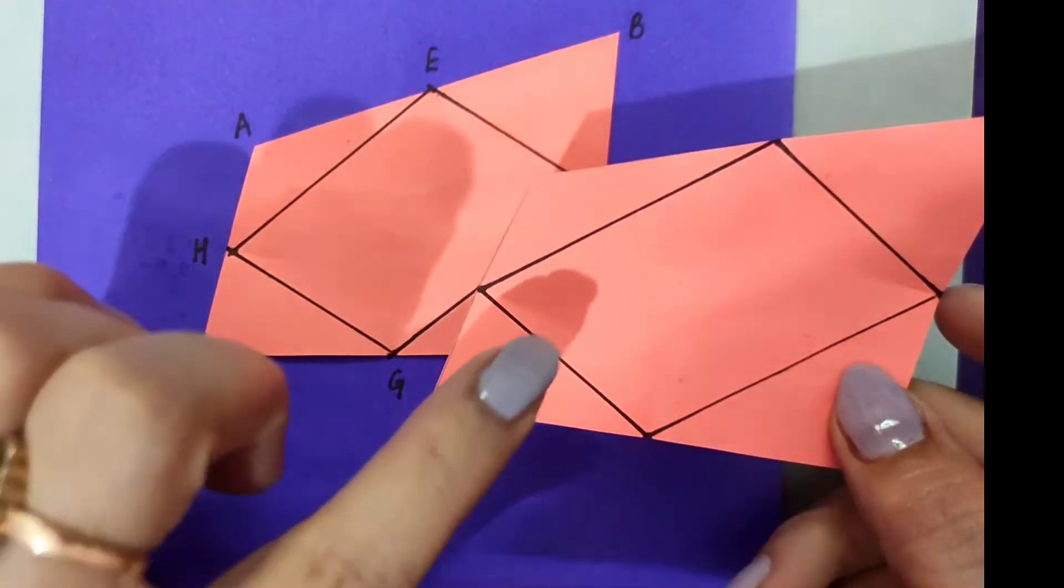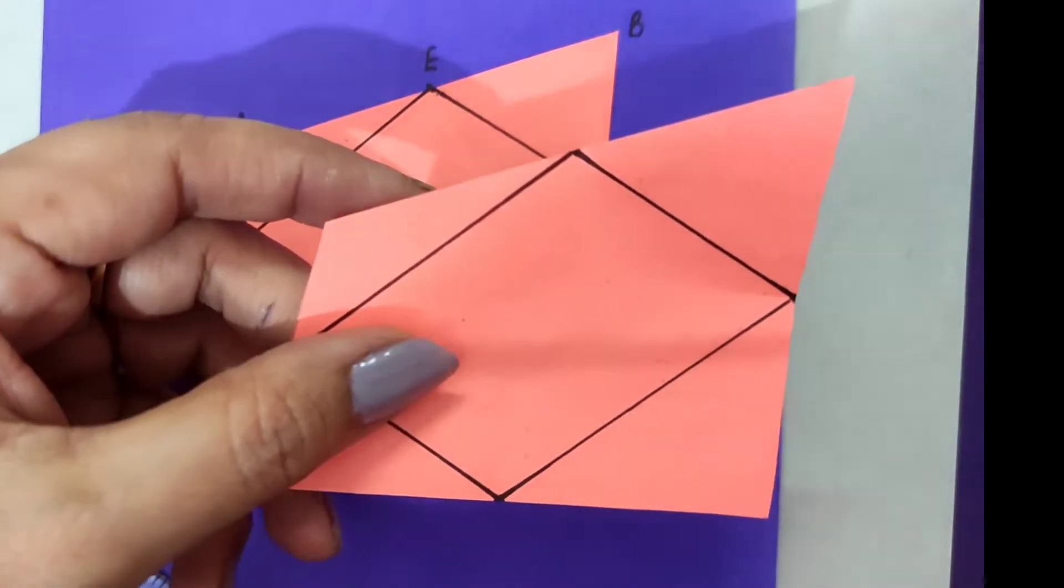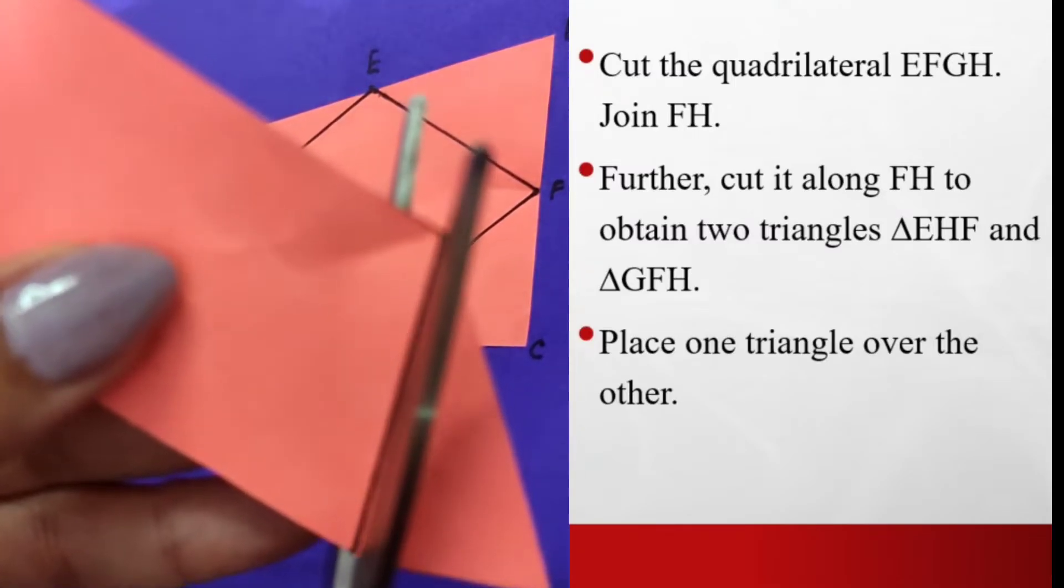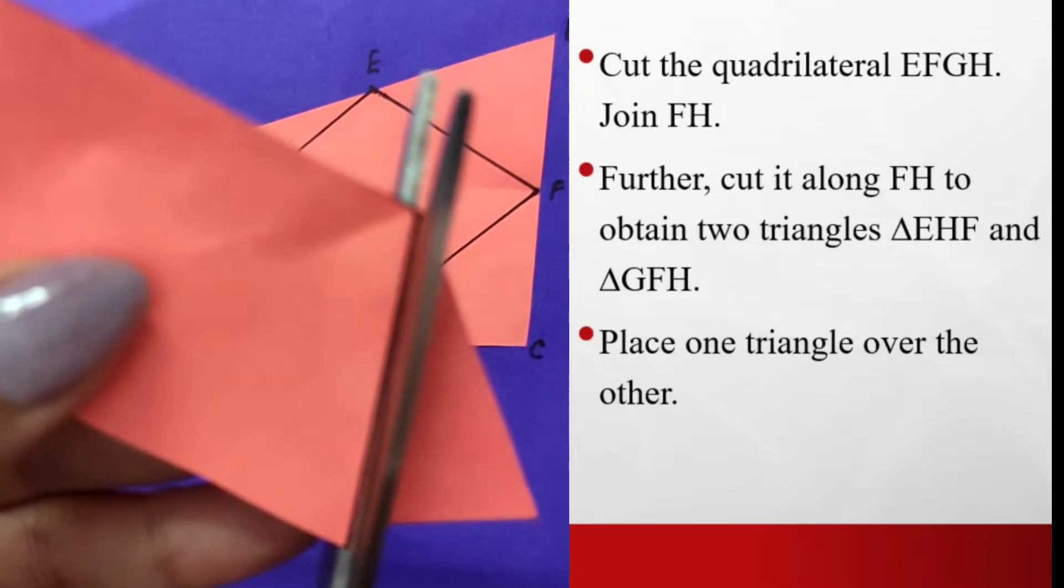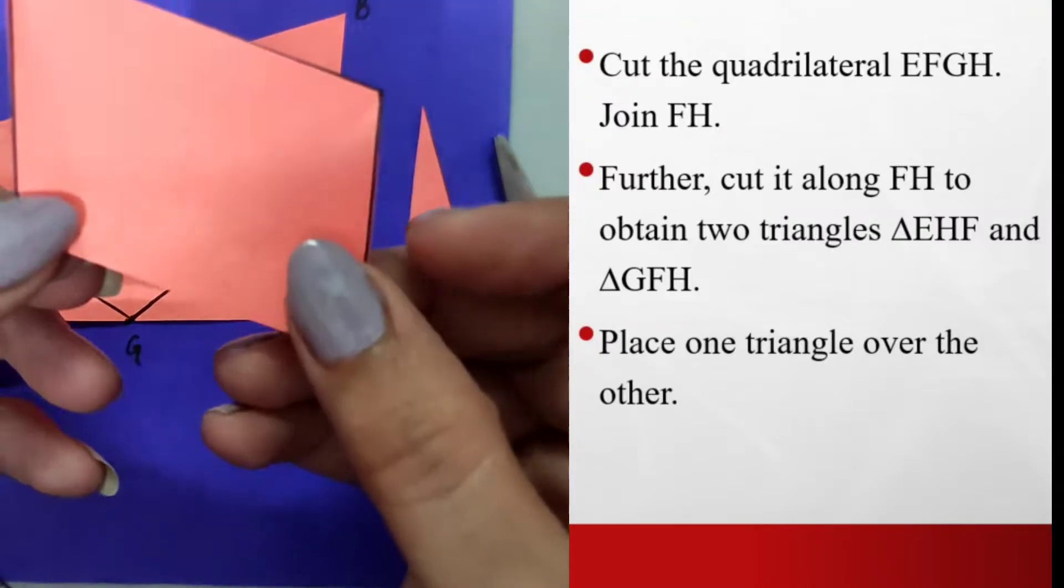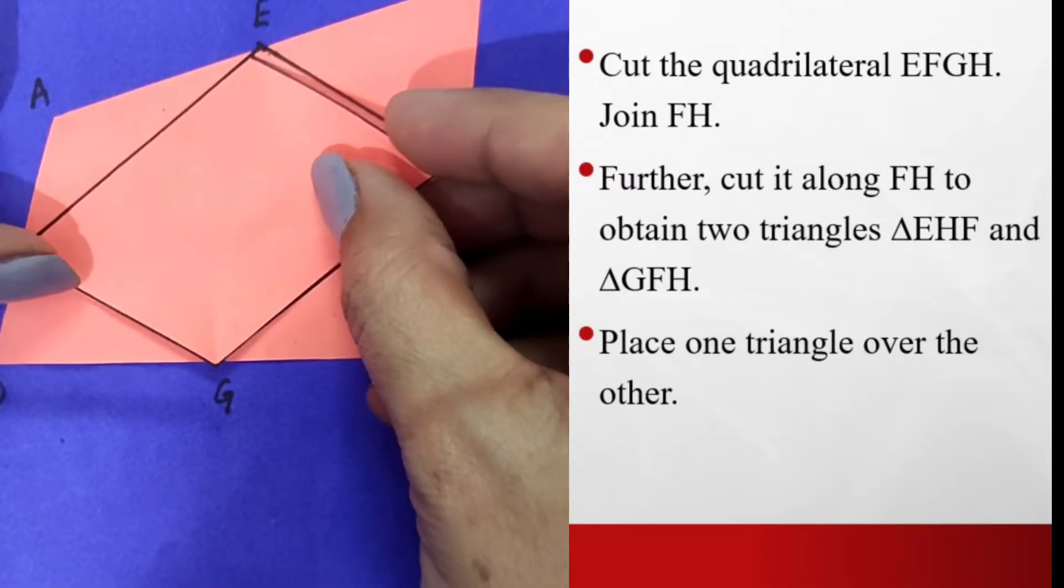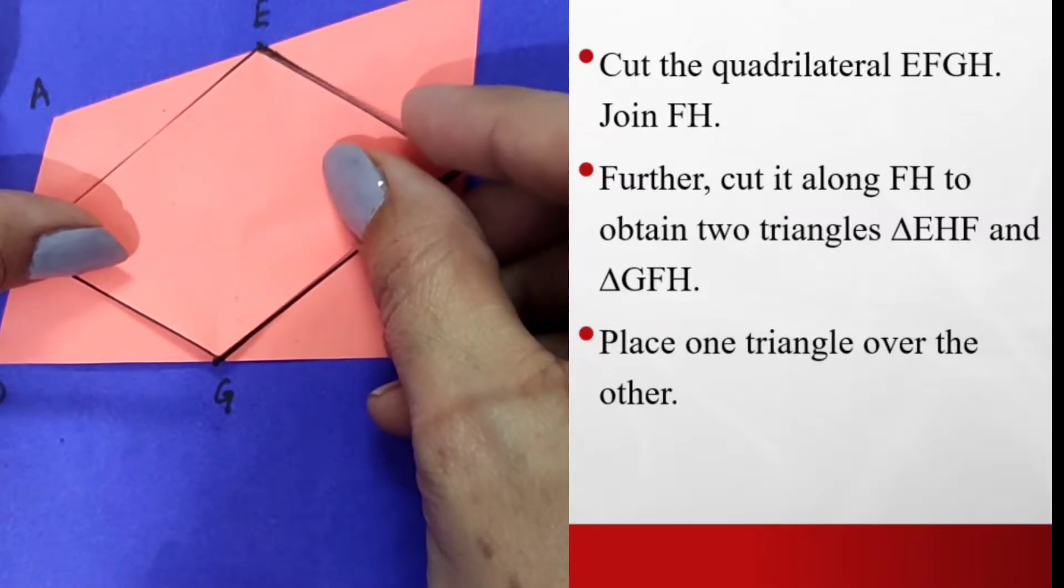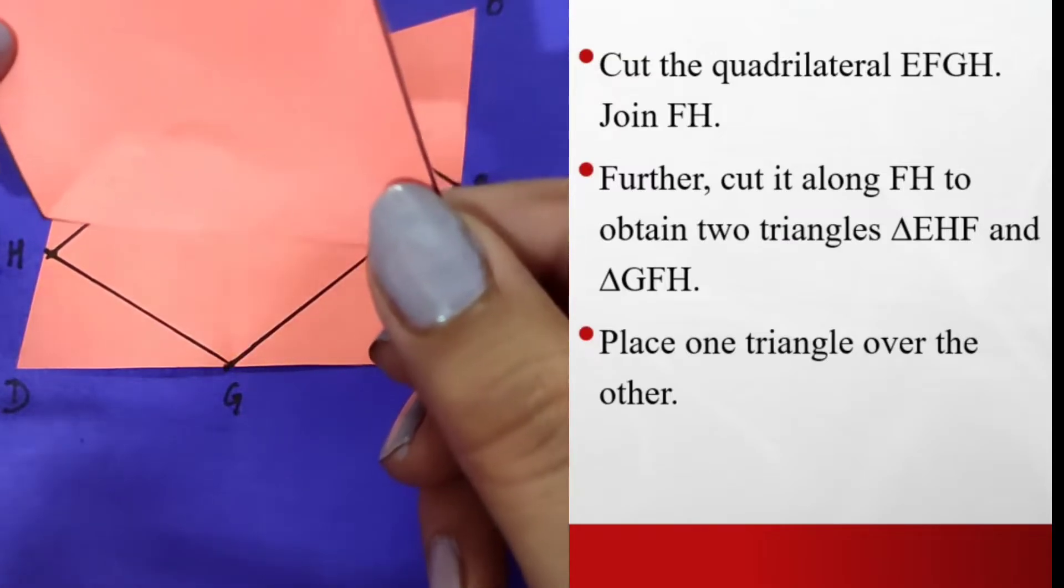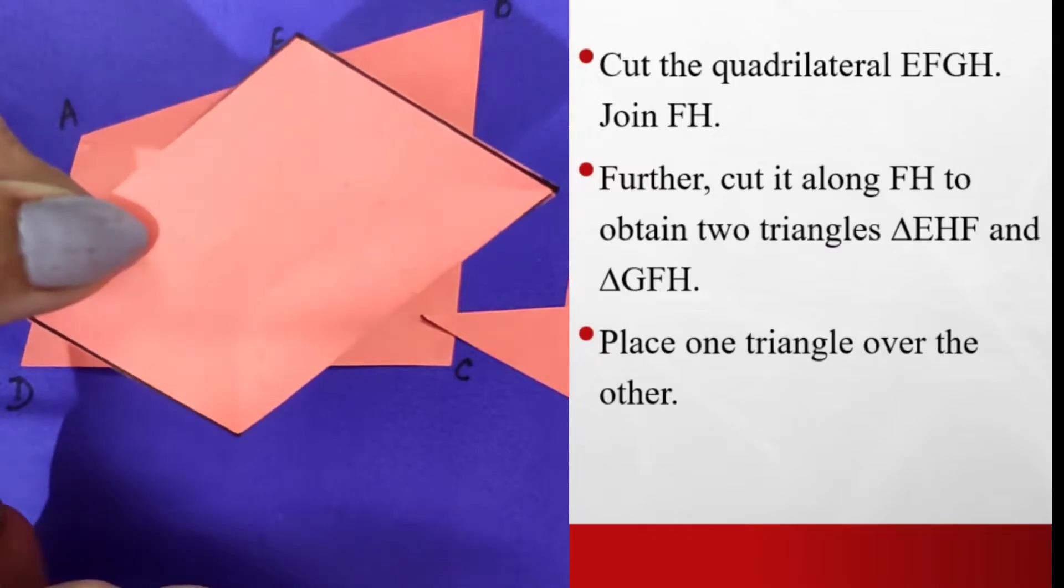Now what is the next step to be done? I am going to cut out this quadrilateral obtained by joining the midpoints. So this is the figure I have got after cutting out. This is the same quadrilateral exactly that I have got after cutting it out from the midpoints. This is point E, F, G, and H point.